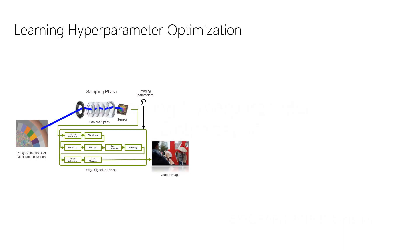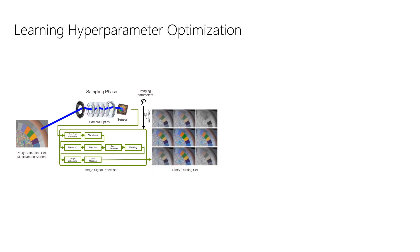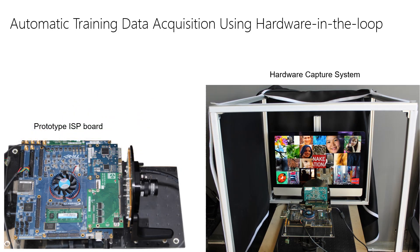Here is the imaging system from before again. To train our proxy models, we first acquire data from an imaging system by randomly sampling its ISP parameters using Latin hypercube sampling. To do this in an automated fashion, we propose a hardware setup consisting of a screen, shown on the right, that is placed in front of the hardware-in-the-loop camera system.